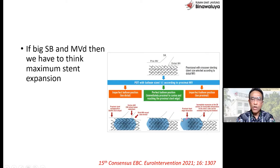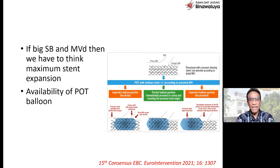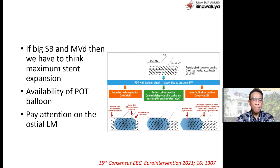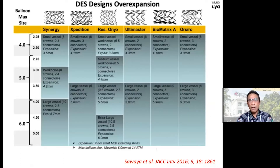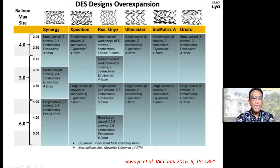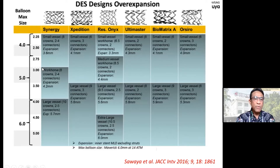Kalau seperti ini di left main, jelas kelebihan karena sudah melampaui — ada mismatch antara panjangnya balon dengan panjangnya stent yang menonjol ke arah left main. Ini juga harus kita hindarkan. Kalau memang tidak bisa, kita terpaksa harus memberikan stent sampai di ostial left main. Ini yang harus diperhatikan dari availability balon POT — harus yang panjang. Kalau kita melakukan POT, terutama pada side branch yang besar atau distal main branch yang besar, jangan lupa menggunakan skema berapa maksimum ekspansi dari tiap-tiap stent. Misalkan Synergy ukuran 3 maksimum cuma 4,2; yang ukuran 4 bisa sampai 5,7.